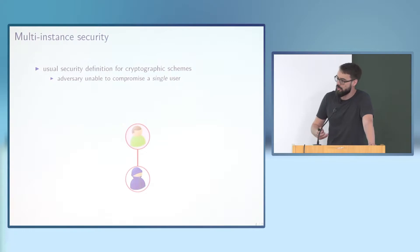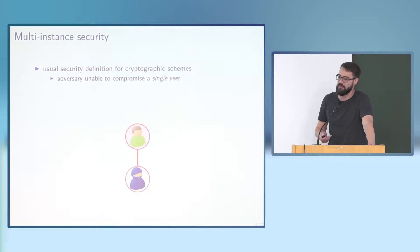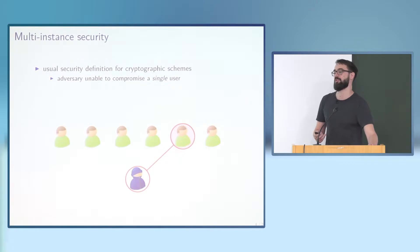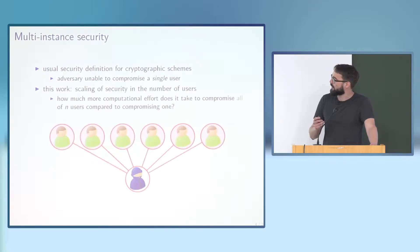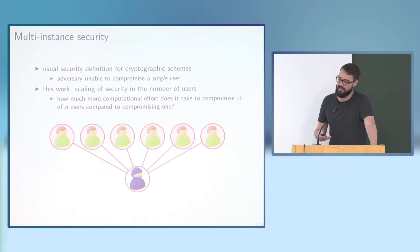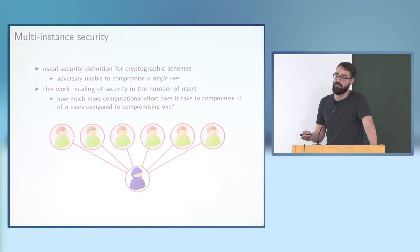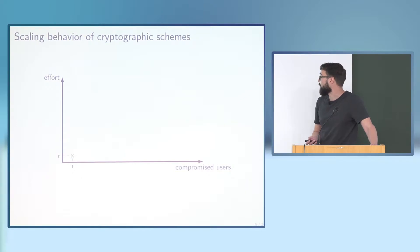Usually when we define the security of cryptographic schemes, we require that it should not be feasible to break the security of even a single user. Sometimes we look at stronger notions like multi-user security, where you have a set of users and require that it should not be possible to compromise a single user. In this talk I will use a different notion: multi-instance security, where we only consider it a break if the adversary is able to compromise the security of all users.